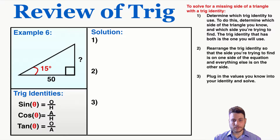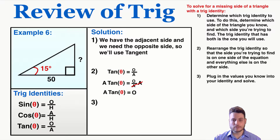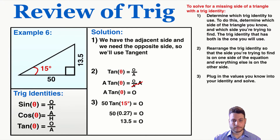Example 6: I have the adjacent side and I'm looking for the opposite side — tangent connects those two. Plugging in my numbers and solving for the opposite side gives me 13.5. So that's how you use trig to find the missing sides of a right triangle.